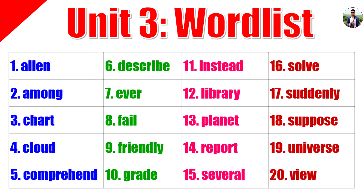Chart: A chart is a list of information. We used a chart to see how we had improved. Cloud: A cloud is a group of water drops in the sky. The sky was filled with white clouds.